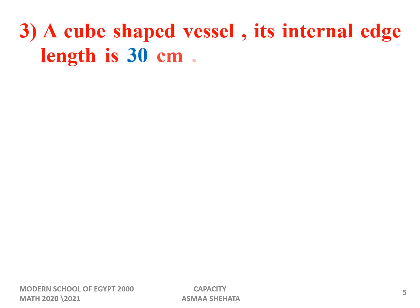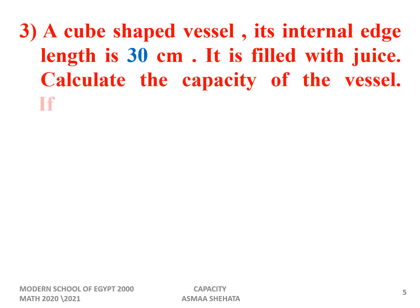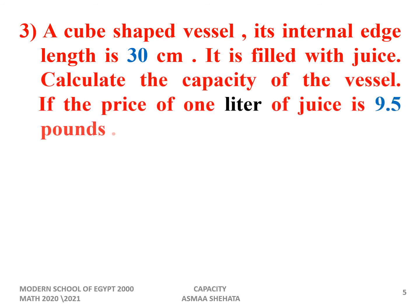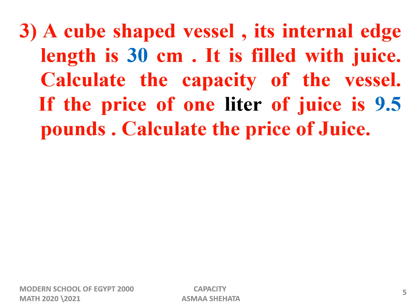A cube-shaped container has an internal edge length of 30 centimeters. It is filled with juice. Calculate the capacity of that container. If the price of one liter of juice is 9.5 pounds, calculate the total price of the juice. Make a circle around the word 'liter.' We solve this problem in three steps: first, get the volume in centimeter cube; then convert the volume to liters because the price is given per liter; finally, calculate the total price by multiplying.